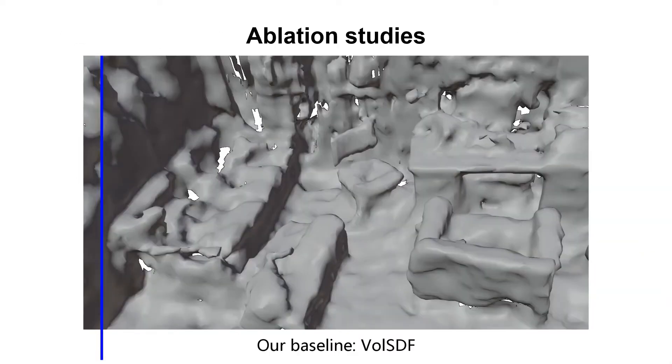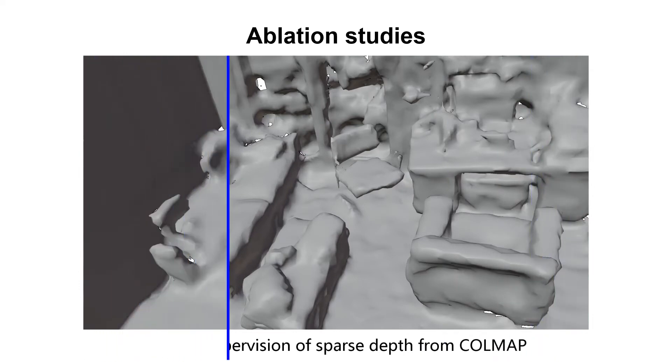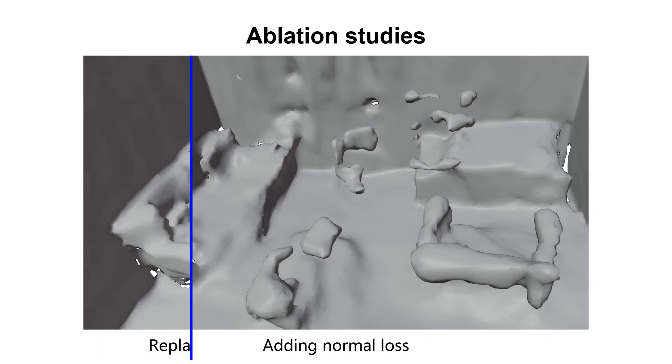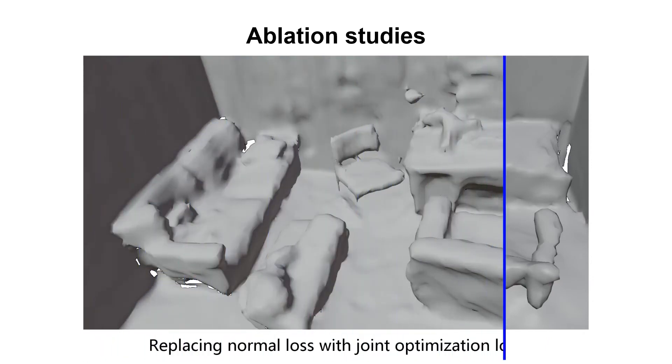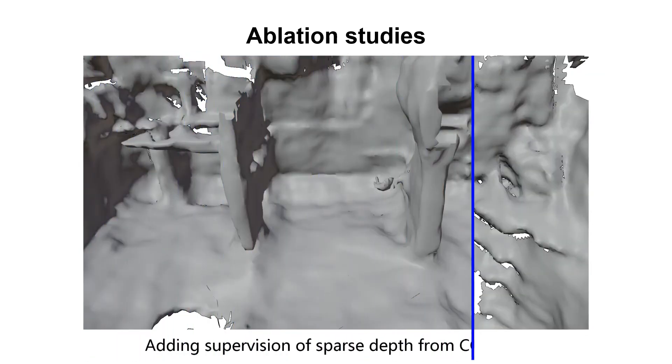We conduct ablation studies on ScanNet and show the effectiveness of each component in our method. The reconstruction results of VolSDF are inaccurate and incomplete, especially in planar regions. By adding the supervision of COLMAP point clouds, the network can converge better, but the reconstruction results are still of low quality.